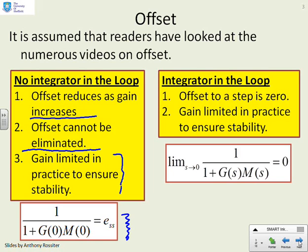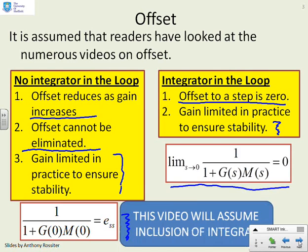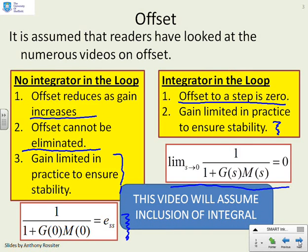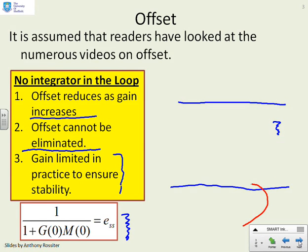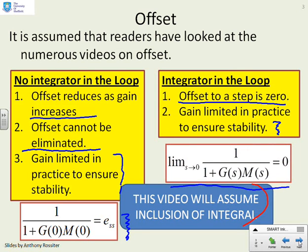If you put an integrator into the loop, and we assume closed loop stability, then the offset to a step in the target is zero. However, the gain is still limited in practice, because otherwise if you make the gain too high you will go unstable. These videos are going to always include an integral, because we want to ensure that the offset is zero — it doesn't make sense to compare plots where offset differs. So for consistency, we'll always include an integral in the following designs.